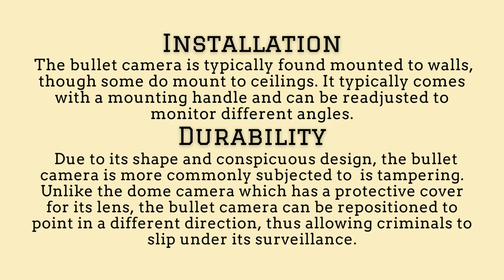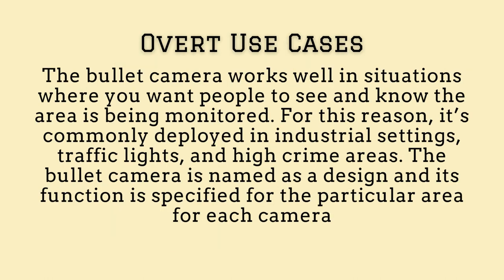Durability: due to its shape and conspicuous design, the bullet camera is more commonly subjected to tampering. Unlike the dome camera, which has a protective cover for its lens, the bullet camera can be repositioned to point in a different direction, thus allowing criminals to slip under its surveillance. Overt Use Cases: the bullet camera works well in situations where you want people to see and know the area is being monitored. For this reason, it's commonly deployed in industrial settings, traffic lights, and high-crime areas.